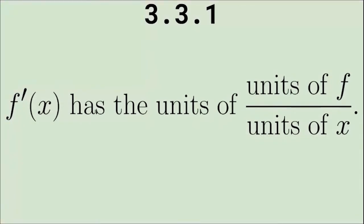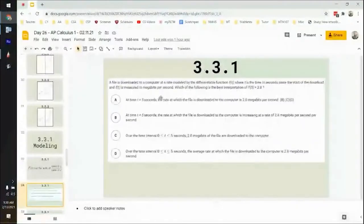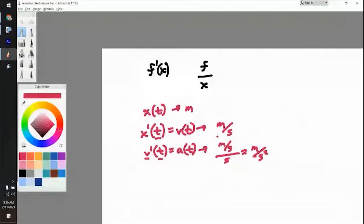So here is an example problem for this, and I apologize ahead of time for all this reading. So it says a file is downloaded to a computer at a rate modeled by a differentiable function f of t, where t is the time in seconds. That's important. Since the start of the download and f of t is measured in megabits per second, which of the following is the best interpretation of f prime of five is equal to 2.8? Holy cow. So much to break down. It's ridiculous, but it'll be fun.